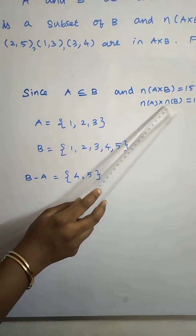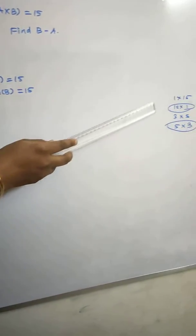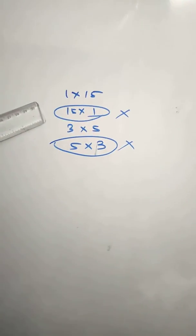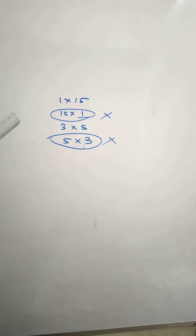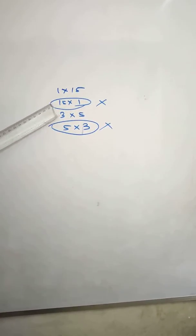If you have a product of 15, there are four possibilities: 1 into 15, 15 into 1, 3 into 5, and 5 into 3. But here we have two key possibilities to consider.